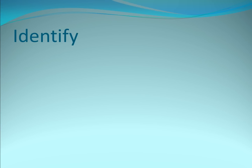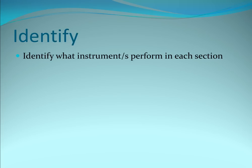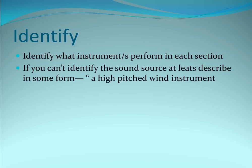Next is to identify. So here you need to identify what instrument performs in each section. If the same five instruments perform all the way through, well that's fine, you state that. But if there's a different group of instruments for each section, you need to state that. If you can't identify the actual sound source, at least describe it in some form, for example a high pitched wind instrument.